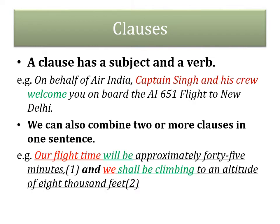The next big part we can find while reading these sentences is the clause. A clause is a group of words which has a subject and a verb. For example, in the sentence 'On behalf of Air India, Captain Singh and his crew welcome you on board the AI-651 flight to New Delhi,' after the comma we find a subject — 'Captain Singh and his crew' — and a verb — 'welcome.' So 'Captain Singh and his crew welcome you on board the AI-651 flight to New Delhi' is a clause.